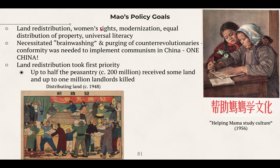Another major goal of Mao's was to achieve more gender equality, and he also wanted to make sure that everyone could read. I put this poster here because it summarizes both these ideas — it shows a girl teaching her mother how to read, promoting both gender equality and universal literacy. With that said, one reason Mao wanted everyone to be able to read was so that everyone could read his ideas — we're not talking about the freedom to read the New York Times or anything like that. Lastly, Mao really wanted China to catch up with the West, and we'll talk about his five-year plan to summarize that.